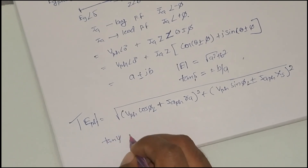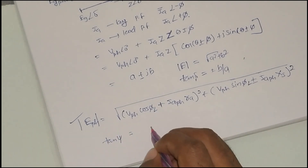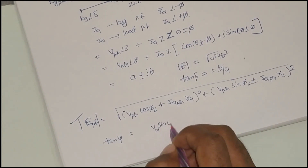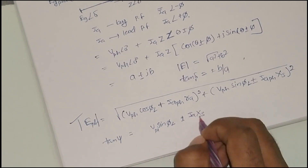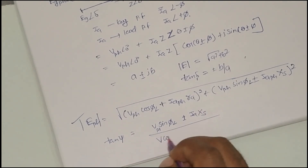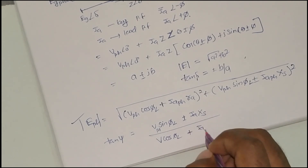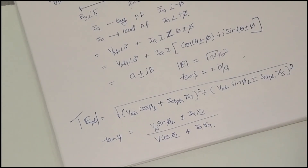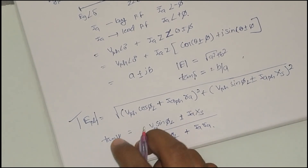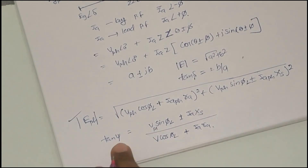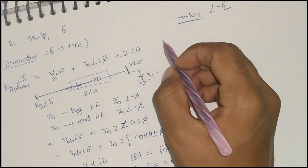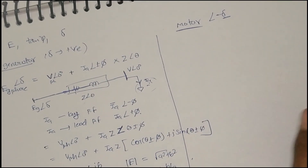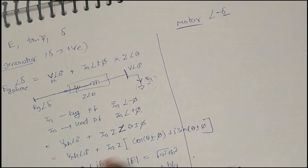From that formula we get only the magnitude of E, not the delta value. For delta, we need one more formula: tan psi equals (V_phase sin phi_L plus or minus I_a X_s) divided by (V_phase cos phi_L plus I_a R_a). From this you can calculate the delta value. Psi is the internal angle — how to get delta from psi will be discussed after the motor section.